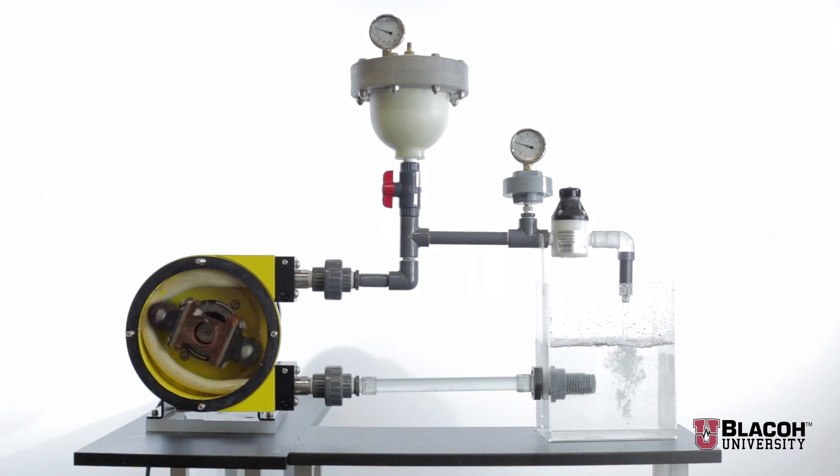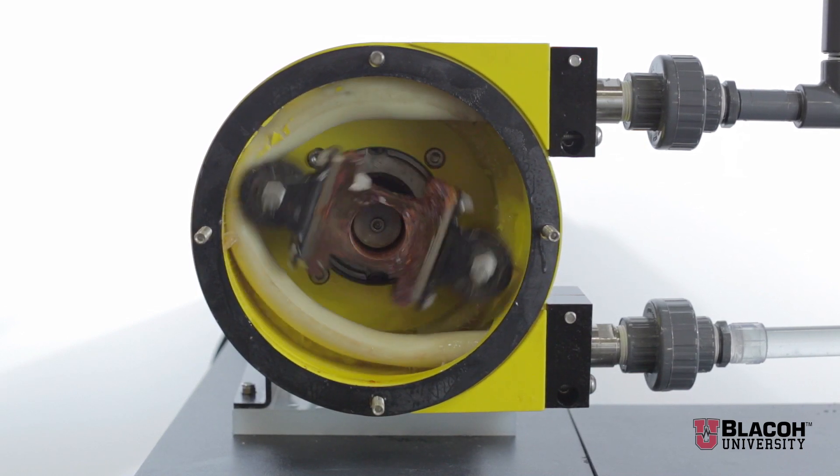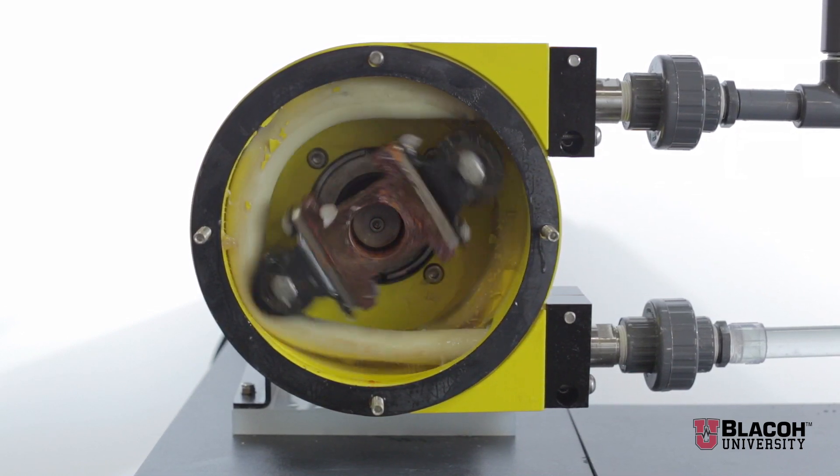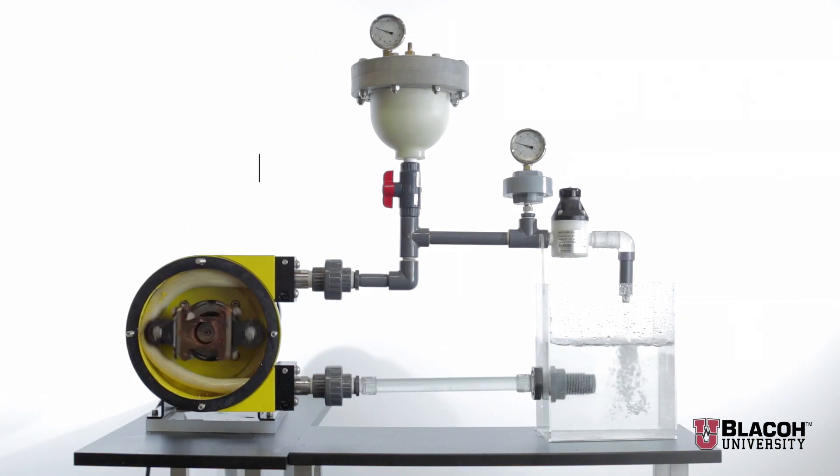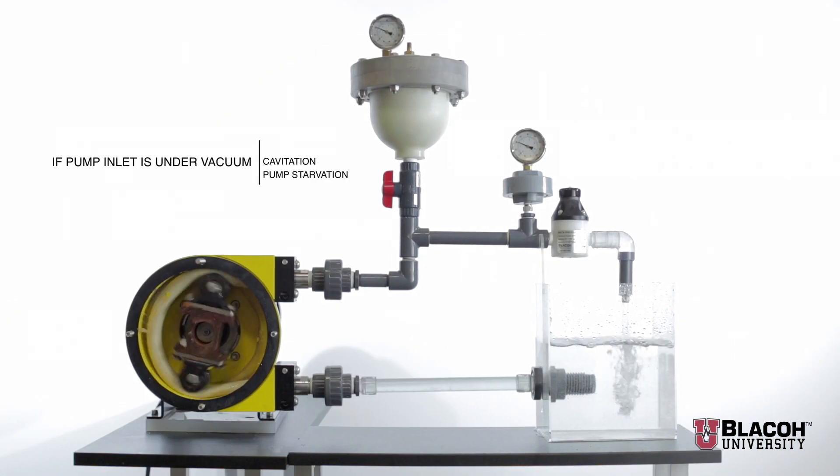If the pump inlet is under positive pressure, acceleration head will cause a pressure spike and vibration, causing potential damage to pipe and components. If the pump inlet is under vacuum, cavitation and pump starvation can occur. These situations can be eliminated or minimized by the installation of Blaco inlet stabilizers.